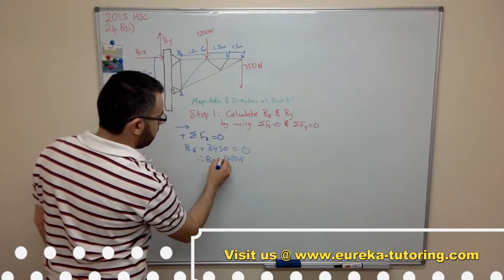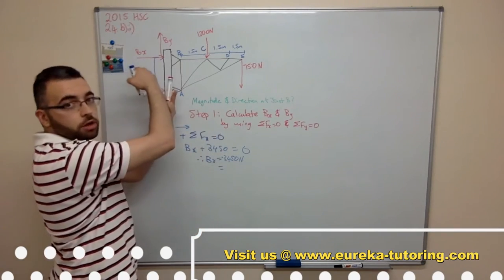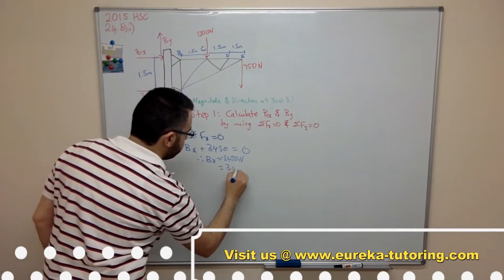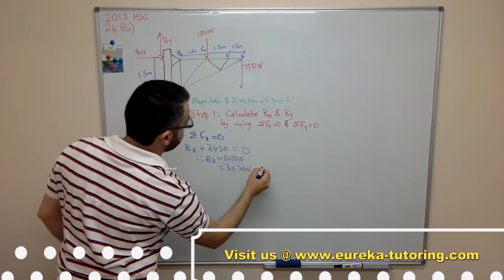It's negative which means we're going to flip the direction. So therefore it's 3450 newtons going this way.